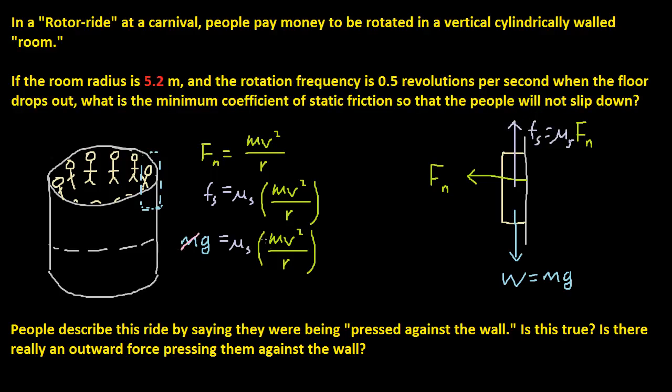So let's isolate mu of s. We multiply each side by the reciprocal, v squared over r. And if we multiply this side by r over v squared, this cancels out. So we're left with mu of s equals r times g over v squared.